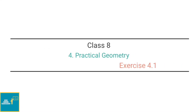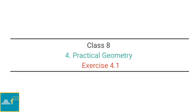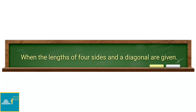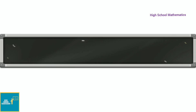Hello everyone, welcome to High School Mathematics channel. Today we are going to learn Class 8, Chapter 4, Practical Geometry, Exercise 4.1. When the lengths of 4 sides and a diagonal are given, let us see how to construct a quadrilateral.